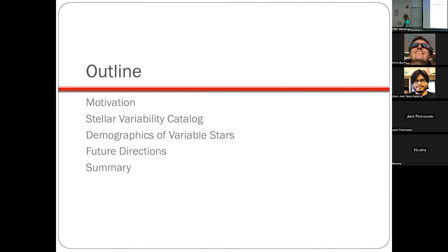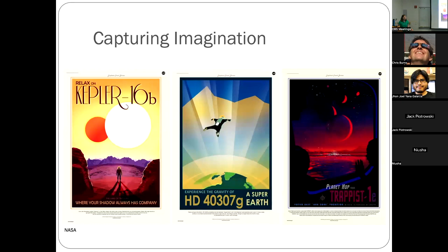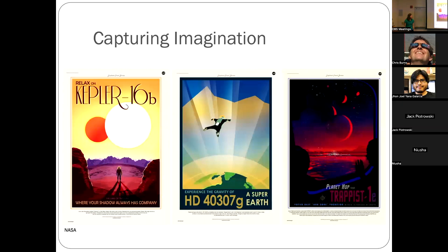If you've ever gone out to the desert or the mountains, away from the city, and looked up at the night sky, you see billions of stars in our own Milky Way galaxy and can't help but ask: are we alone? With the discovery of exoplanets, we've found a broad diversity in the types of planets that life could exist on. It makes us imagine what it might be like to live on a planet with two stars or on a planet more massive than Earth.